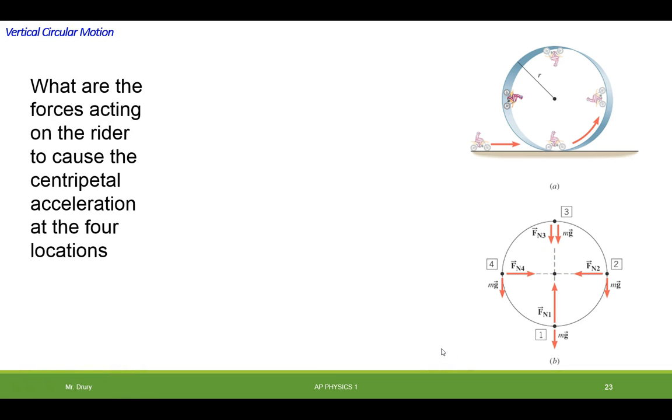Alright, so what I would like to do is: what are the forces acting on the rider to cause the centripetal acceleration at these four locations? Well, we know that centripetal force is equal to the sum of whatever forces are acting on it. And that causes the centripetal acceleration to hold it in a circle.